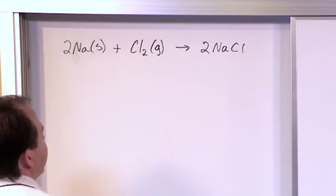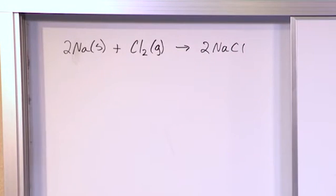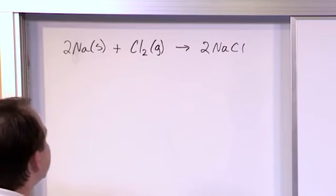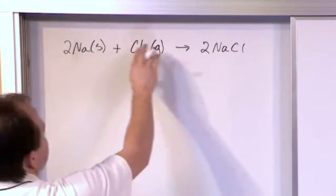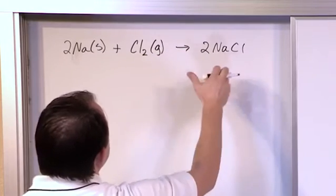So this is sodium chloride, this is table salt, this is what you sprinkle on your food and what you eat. So you can see that it's balanced. Two sodiums, two sodiums, two chlorines, two chlorines, everything is wonderful.